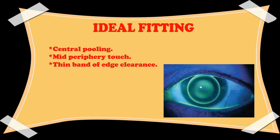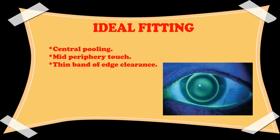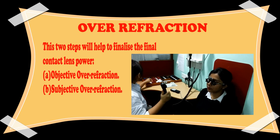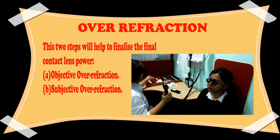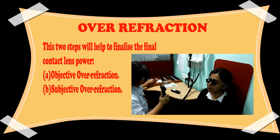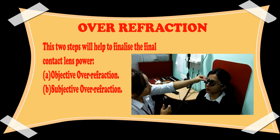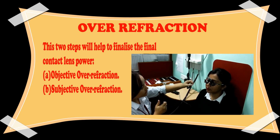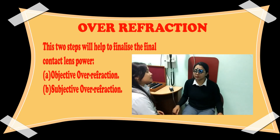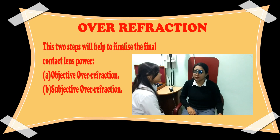In ideal fitting, we can see central pooling with mid-periphery touch and a thin band of edge clearance. After finalizing the ideal fit of the RGP contact lens, we do over-refraction — both objective and subjective — to finalize the final power of the contact lens.